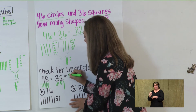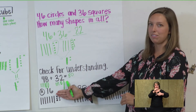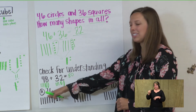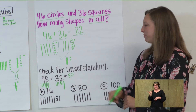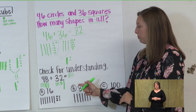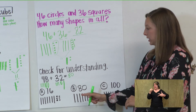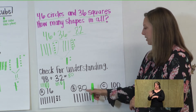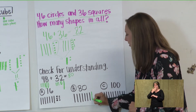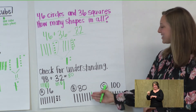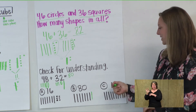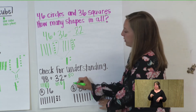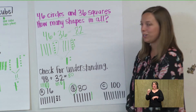Let's look back at our answer choices. A said 76 — it gave us seven rods and six ones. Is 76 the same as 80? B says 80 — let's count the rods: 1, 2, 3, 4, 5, 6, 7, 8. Eight rods gives us 80. And C says 100 — ten rods would give us 100. If you guessed B, you're correct.